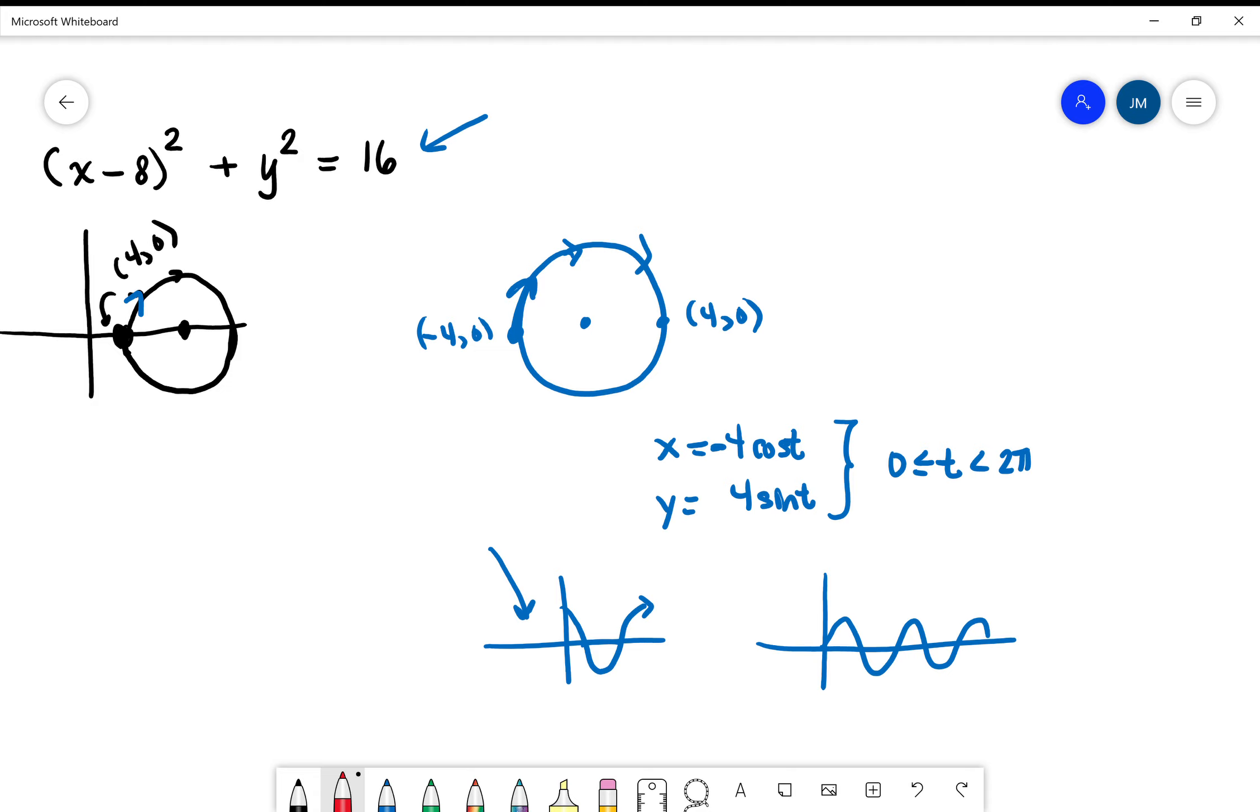So coming over here to the original problem, now what happens when I move that center to 8, 0? Well, it's actually quite simple. The x-coordinate just increases by 8, and the y-coordinate stays the same. So we're going to have x equals negative 4 cosine t plus 8, and y equals 4 sine of t.